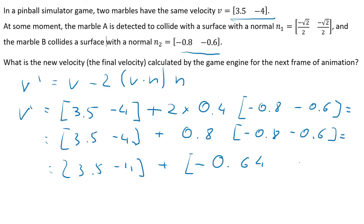And now we have just addition of two vectors. So 3.5 minus 0.64 is 2.86, and now negative 4 minus 0.48 is negative 4.48.